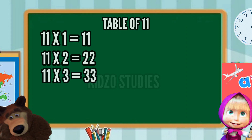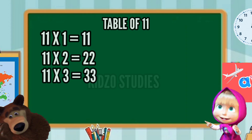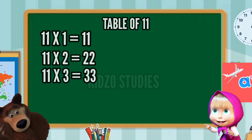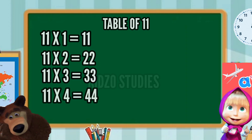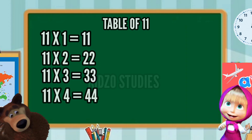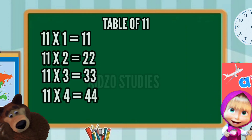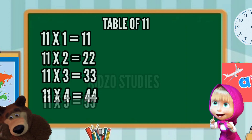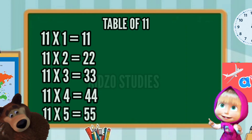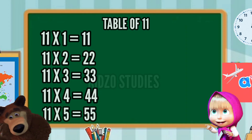Eleven threes are thirty-three. Eleven fours are forty-four.